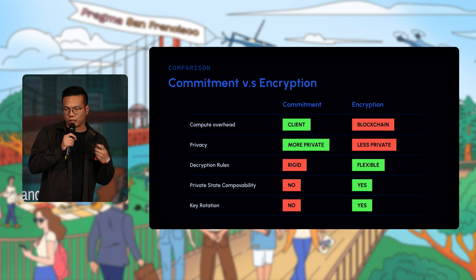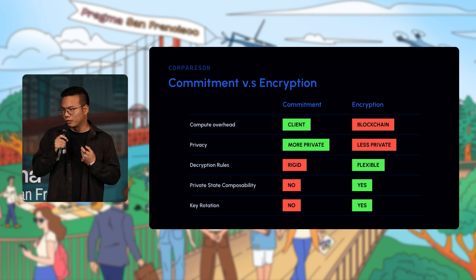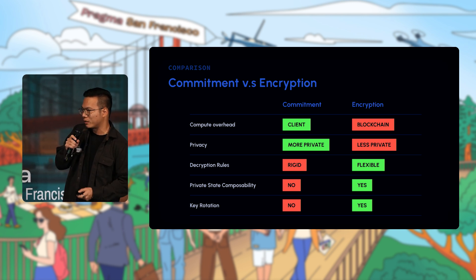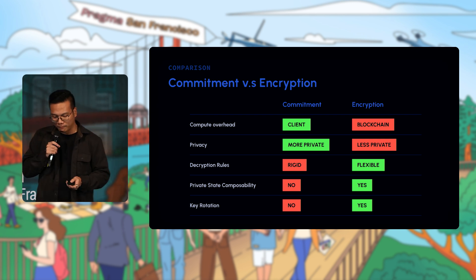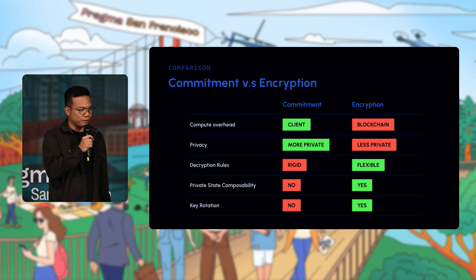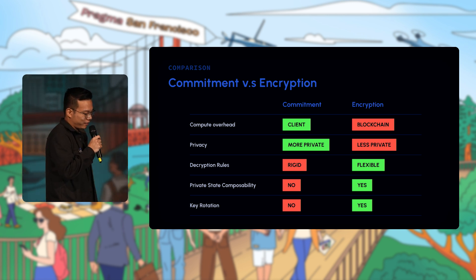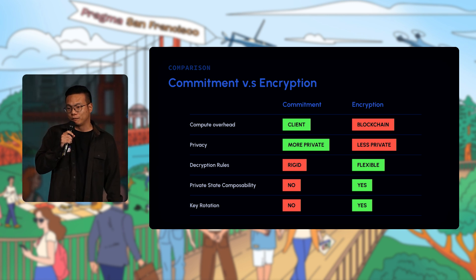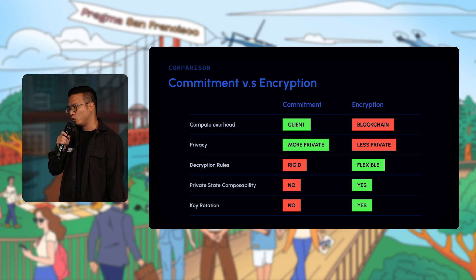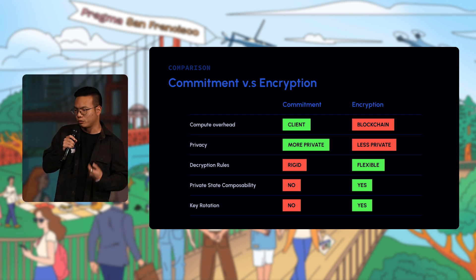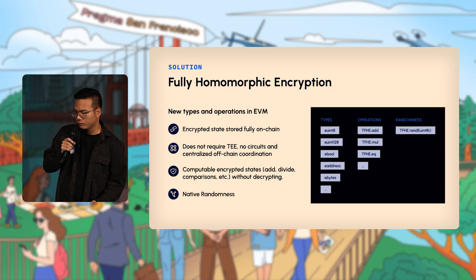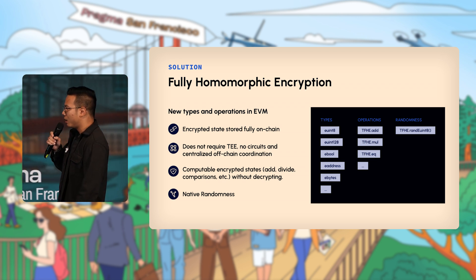With encryption-based FHE, you can have shared private states that everyone can interact with, making composability much more straightforward. Lastly, key rotation — revoking a key in a commitment-based system is basically not possible. You're stuck with what you set up ahead of time. With encryption-based systems, you can actually rotate the key using re-encryption or by transferring directly using FHE.